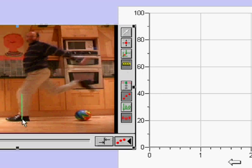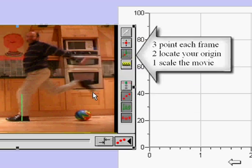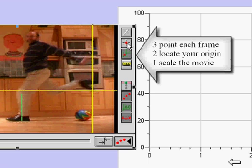Give a size to the movie—in this case, 0.5 meters for the distance shown—then locate your origin, then point each frame.